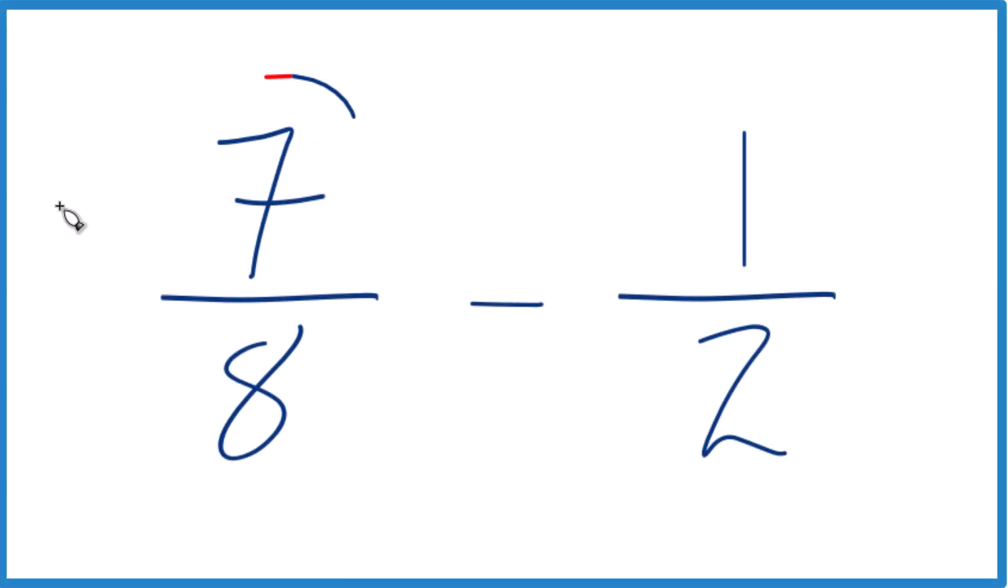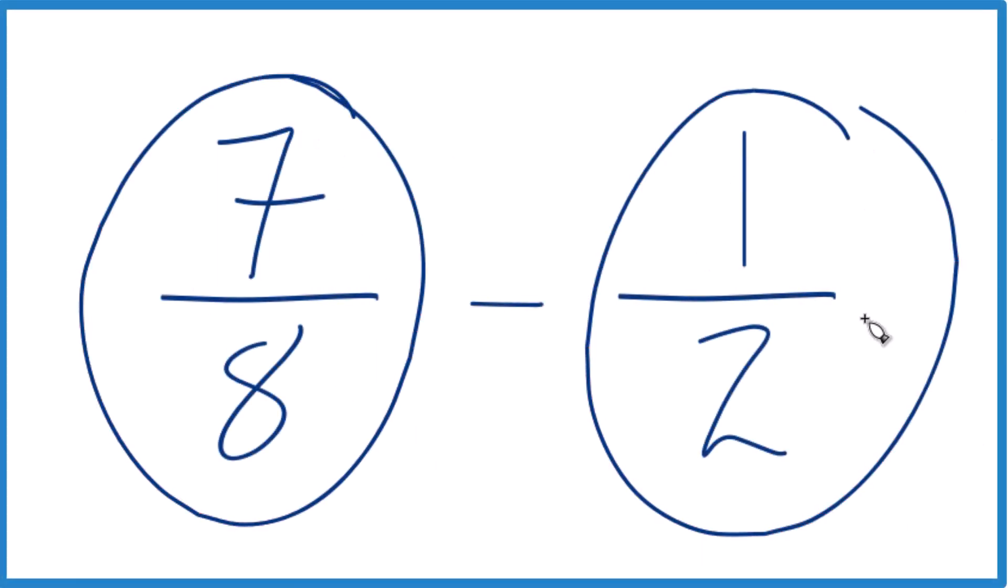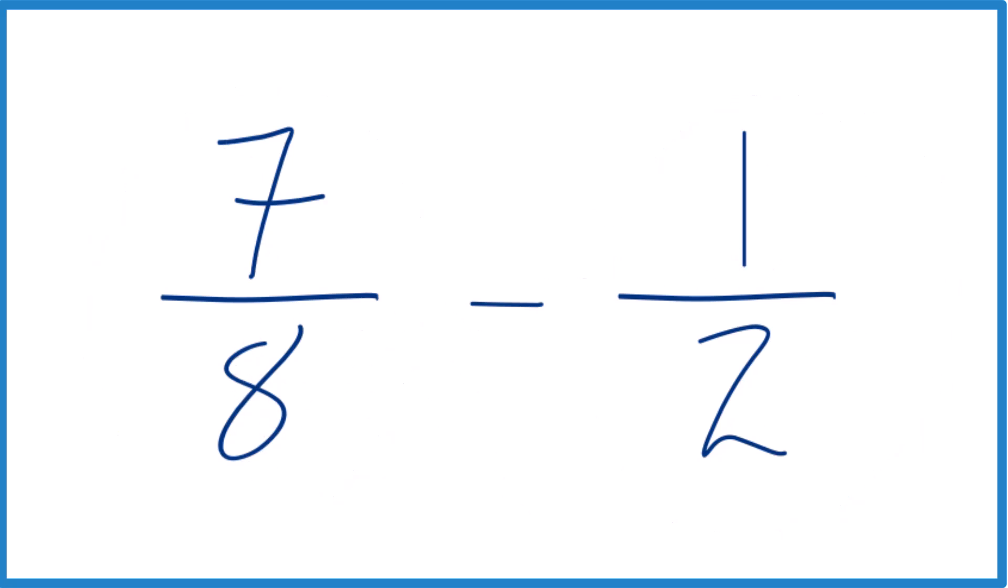Right, so let's take 7 eighths minus 1 half. So what do we end up with? So maybe you have 7 eighths of an inch and you want to subtract 1 half of an inch.